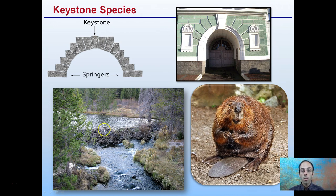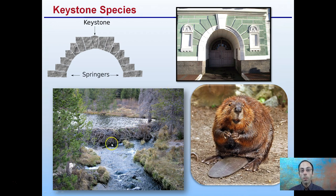Another example of a keystone species is the beaver. Beavers build dams, changing water flows and raising water levels, which can largely impact an ecosystem. If we remove the beavers, it can really change how this local environment behaves and what's allowed to survive and what will sadly perish. That's why we leave the beaver.